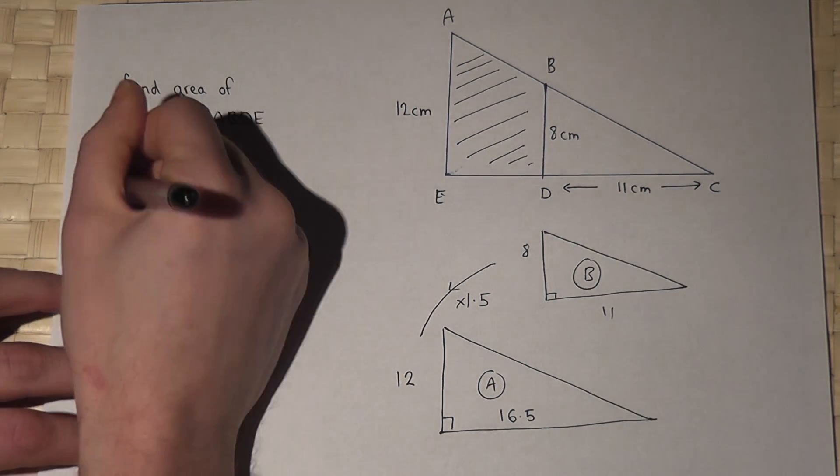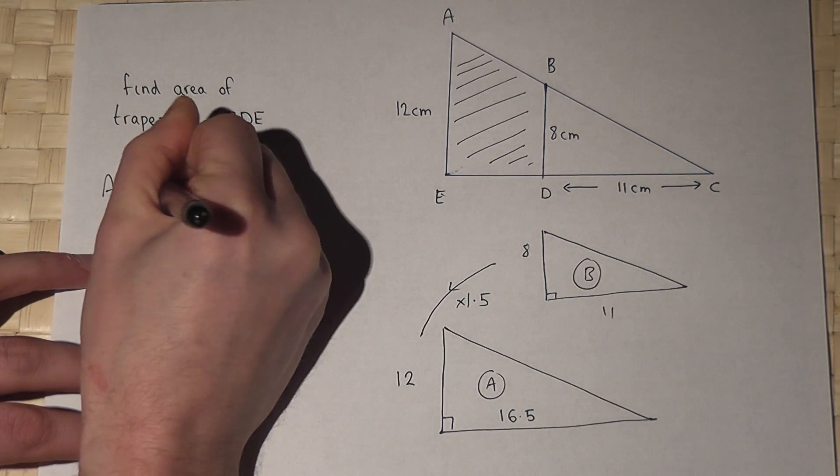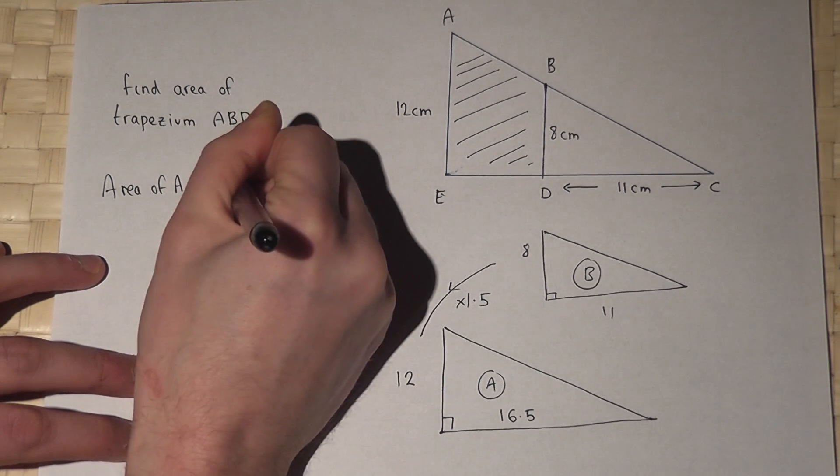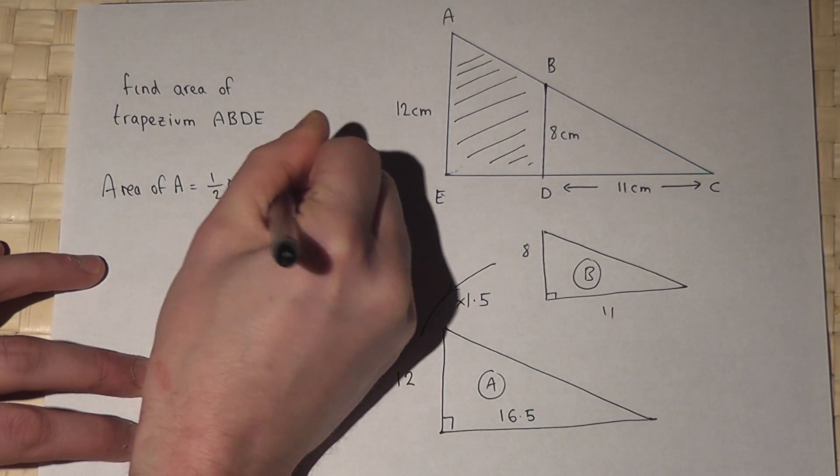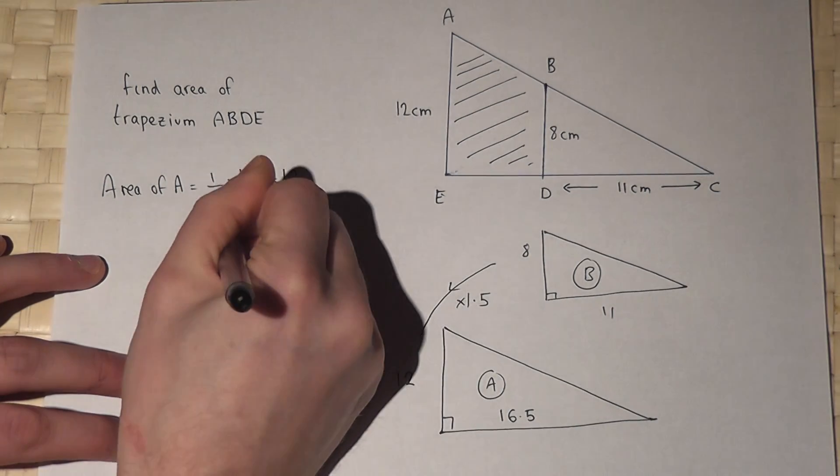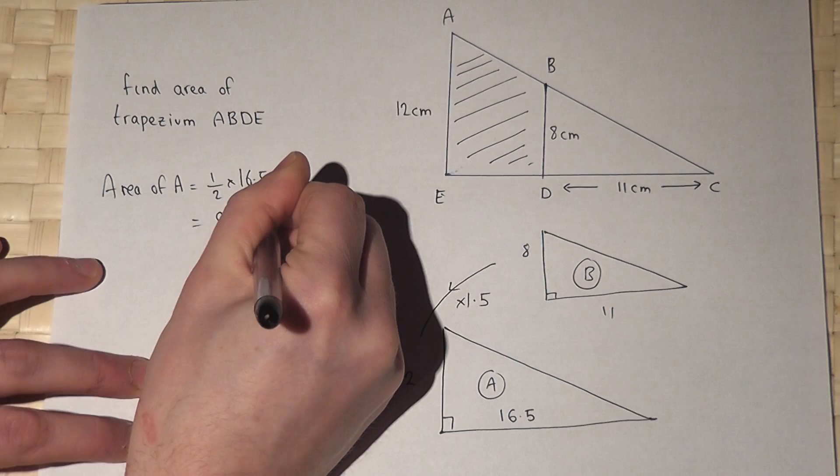And the area of A just equals a half base times height, which is just 99 centimeters squared.